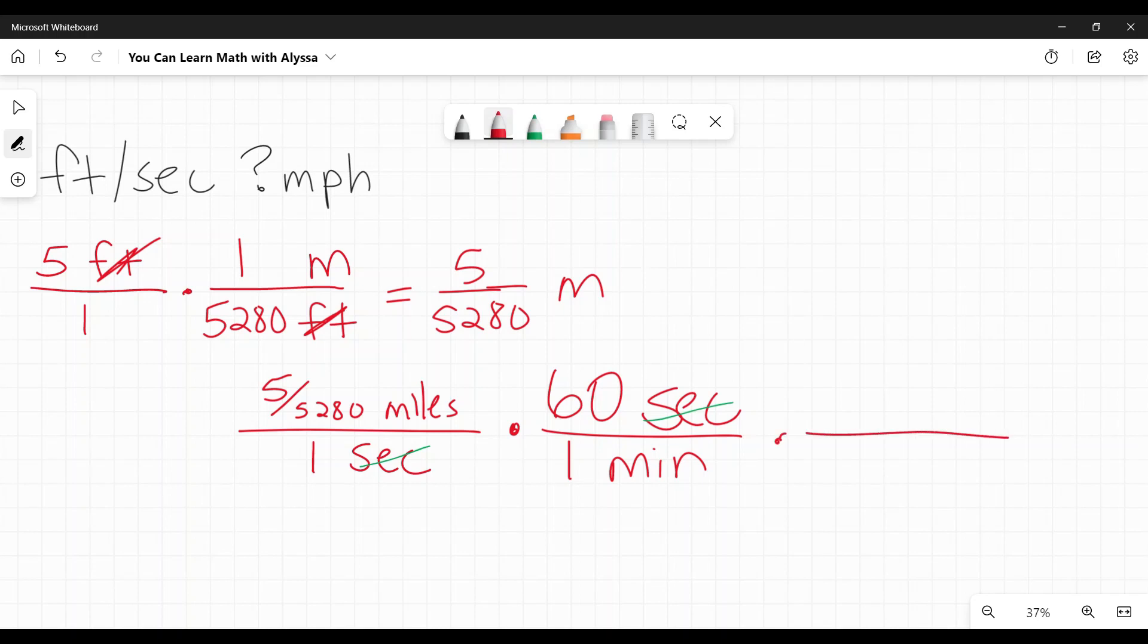How many minutes are in an hour? Minutes is on the bottom. So I'm going to put minutes up here. So then the minutes will cancel out. How many minutes are there in an hour? There are 60 minutes in one hour. The minutes are going to cancel. What units am I left with on top? Up here. The only thing left is miles on the bottom. Only thing left is hours, miles per hour. And that's what I want.